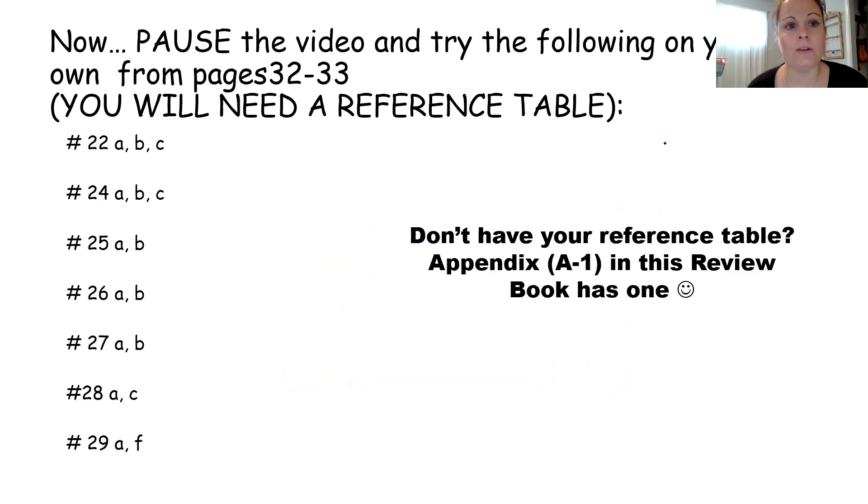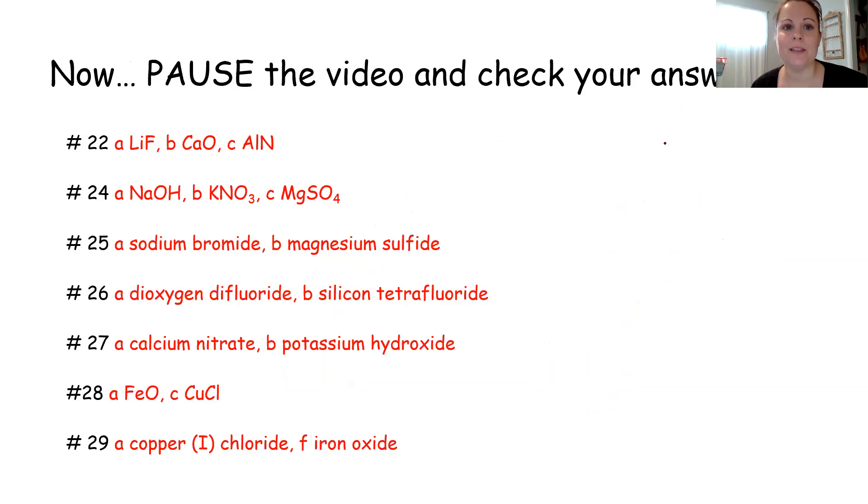Pause the video again, and I want you to try a couple different naming compound problems on pages 32 to 33. You will need your periodic table for this. So again, if you don't have one, Appendix A1 in this review book has a reference table. So pause the video and give these a try. When you're done, pause the video again and check your answers.